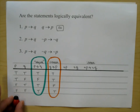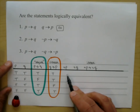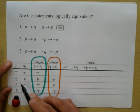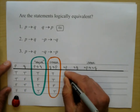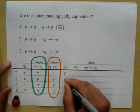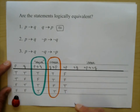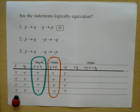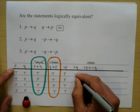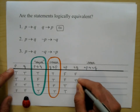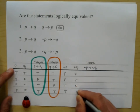Let's create the negation-P column. P is true, true, false, false, so negation-P is false, false, true, true. For negation-Q: Q is true, false, true, false, so negation-Q is false, true, false, true.